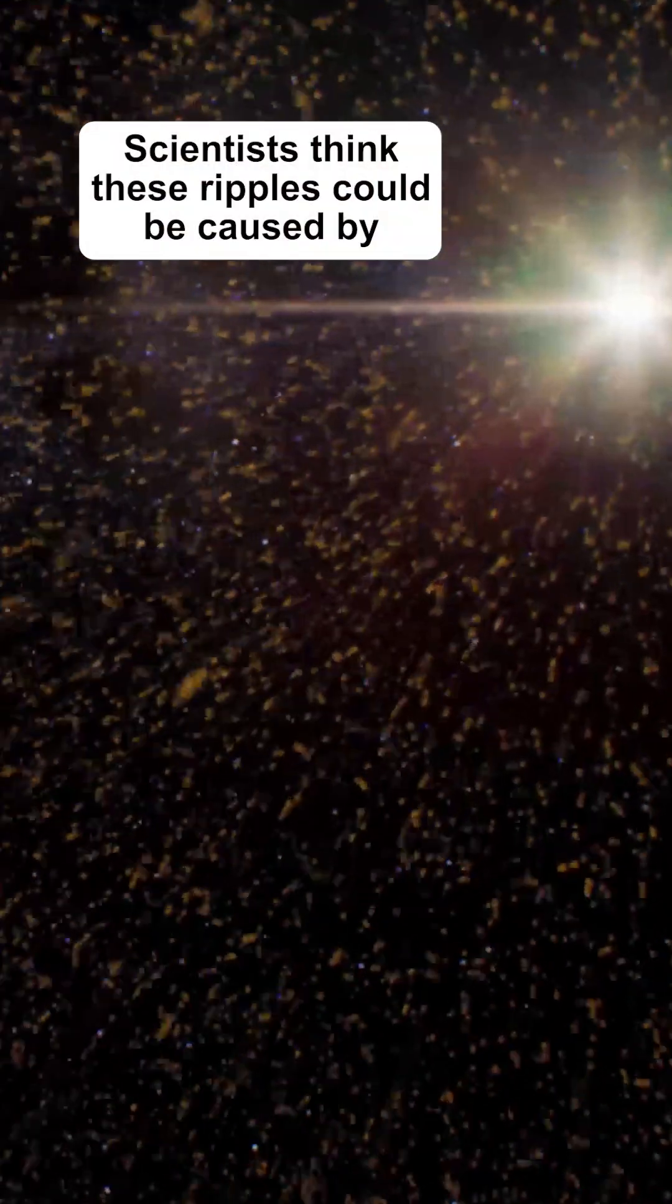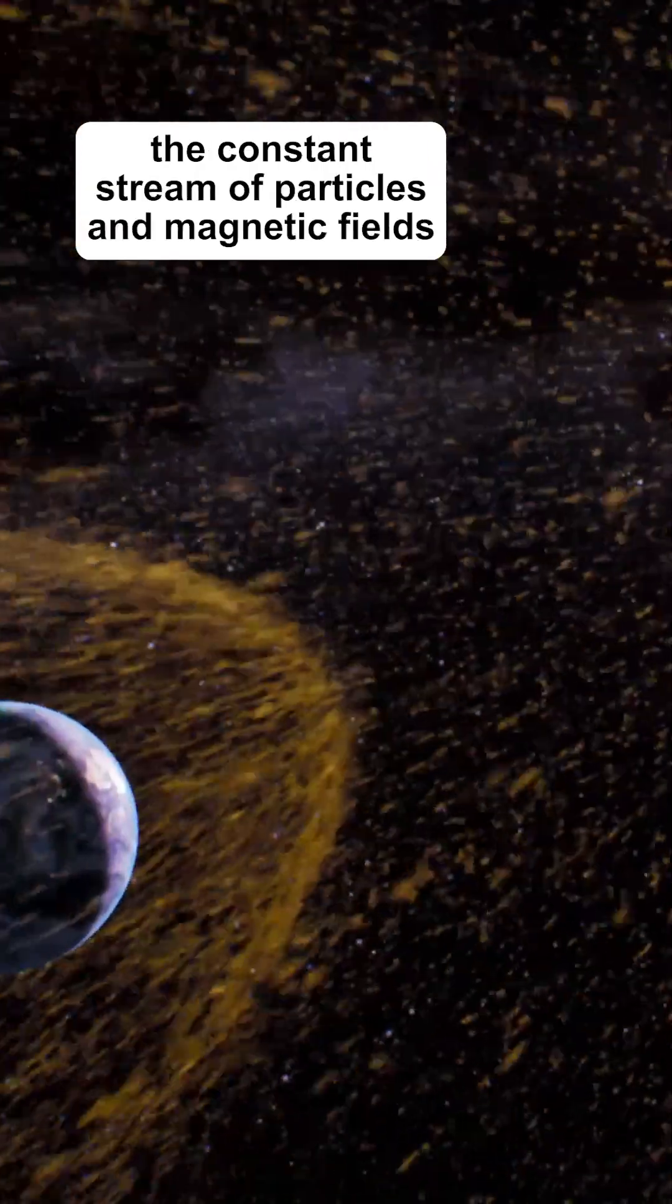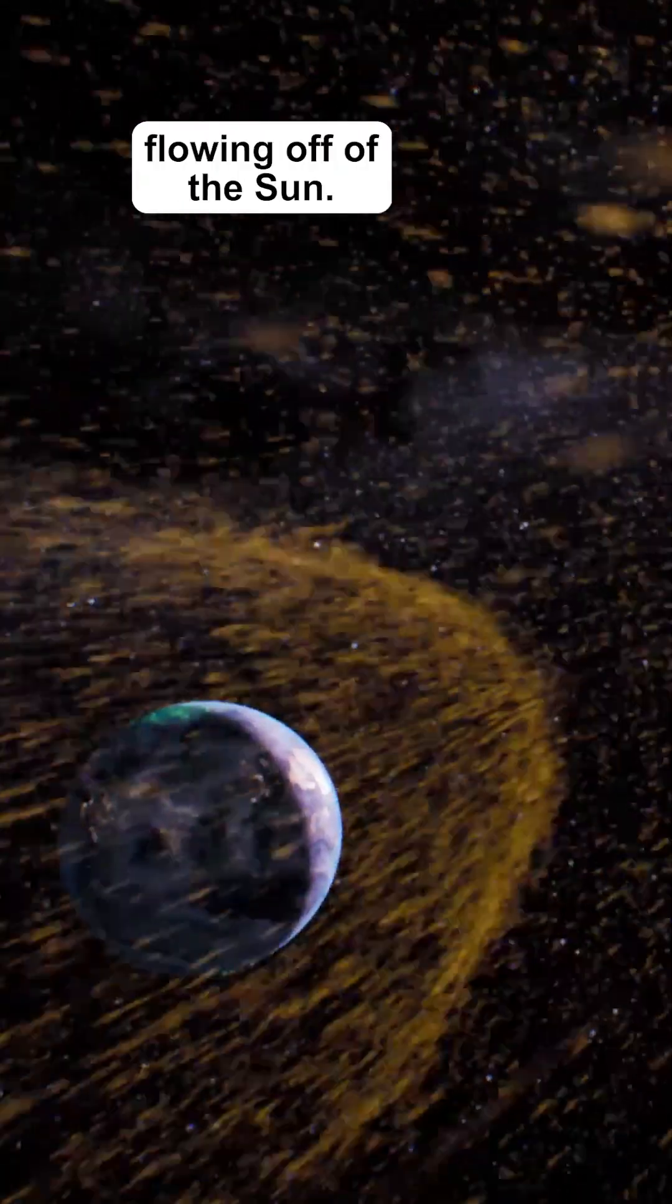Scientists think these ripples could be caused by changes in the outward pressure of the solar wind, the constant stream of particles and magnetic fields flowing off of the Sun.